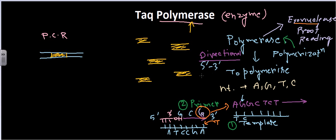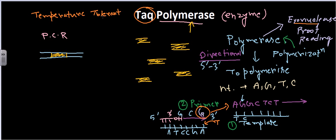These are the important features of a general polymerase enzyme. Now Taq polymerase is a slightly specific and special type of polymerase used during the PCR reaction. It has all the features present in normal polymerase enzymes, but the most important additional feature is that it is very much temperature resistant.